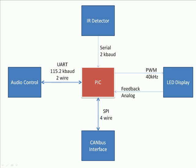This is an example of a simple system. The inputs and outputs aren't all drawn here, but you can see there's some sort of IR connection and many other connections going into the system. The PIC block is really the core controlling everything else. The IR detector sends serial data at 2kbaud, audio control is handled through a UART, SPI controls the CAN bus interface, and the LED display has PWM controlling it along with an analog feedback signal.